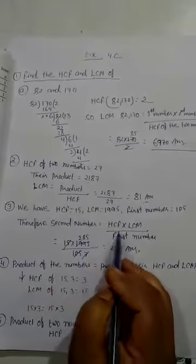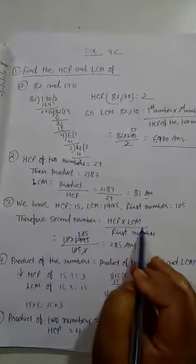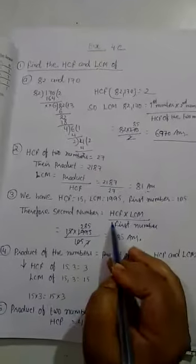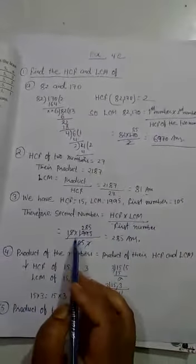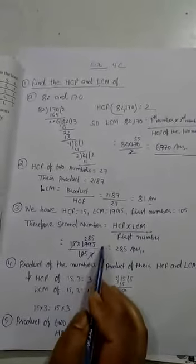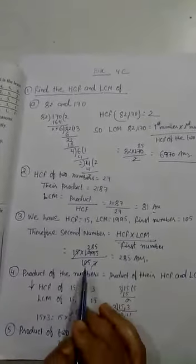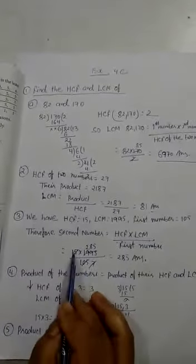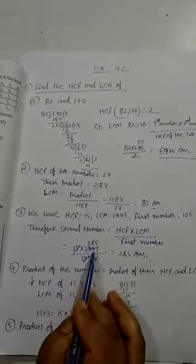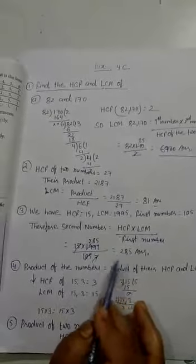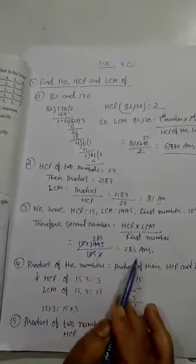Therefore, second number equals HCF into LCM divided by first number. We multiply HCF and LCM and divide by first number. We cut 15, 7, 105, or 7, we get 285. This is answer.